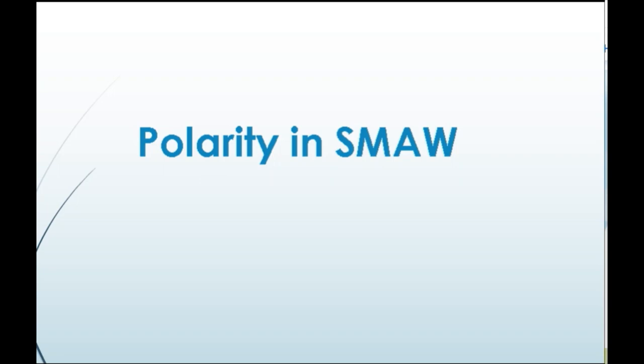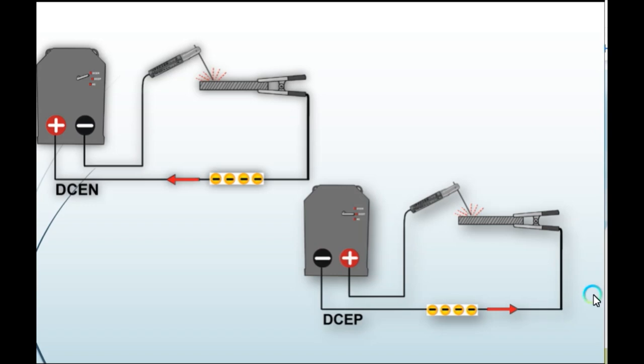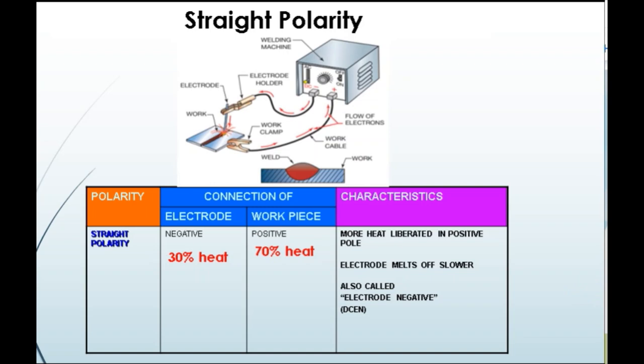Next, let's understand polarity in shielded metal arc welding. There are two types: 1. Direct Current Electrode Negative (DCEN), and 2. Direct Current Electrode Positive (DCEP). In DCEN, also called straight polarity, the electrode holder is connected to the negative terminal while the workpiece is connected to the positive terminal. Here, more heat is liberated at the positive pole, and the electrode melts off slower, resulting in less deposition efficiency.